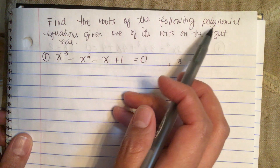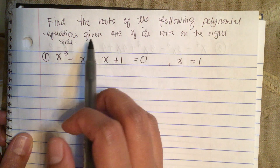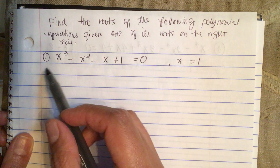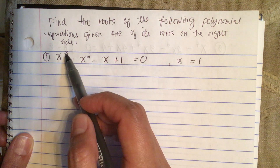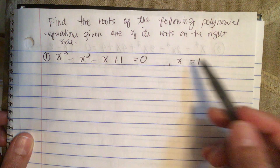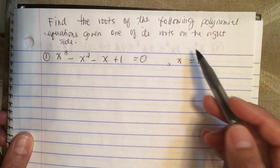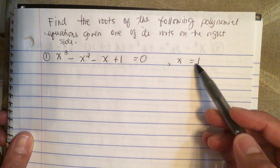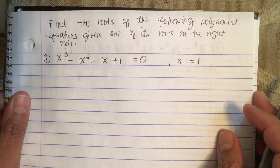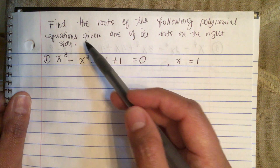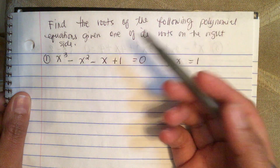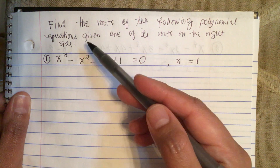Find the roots of the following polynomial equations given one of its roots. We have x cubed minus x squared minus x plus 1 equals 0, and they've given us one of its roots: x is equal to 1. Since there are no specific instructions on how to solve this problem, I'll solve it by synthetic division.